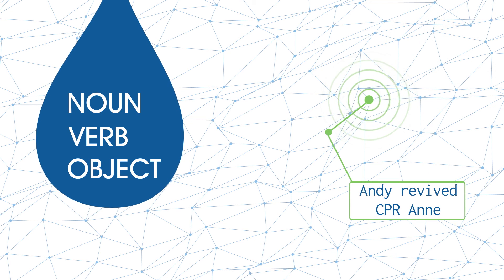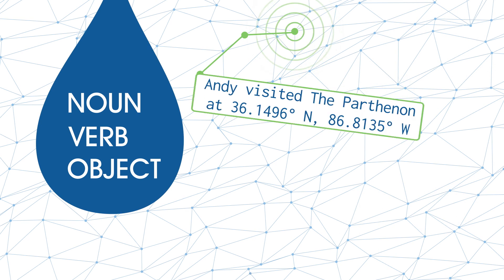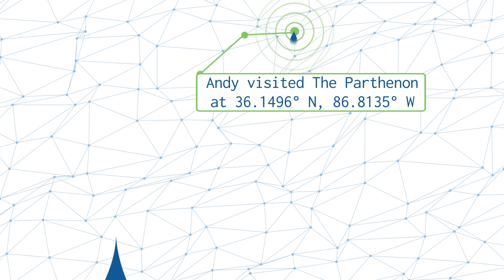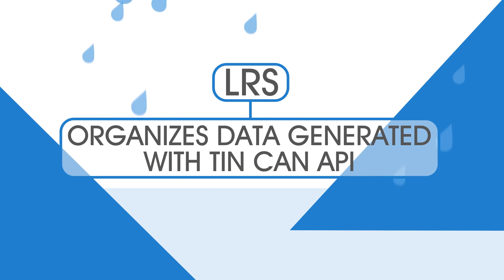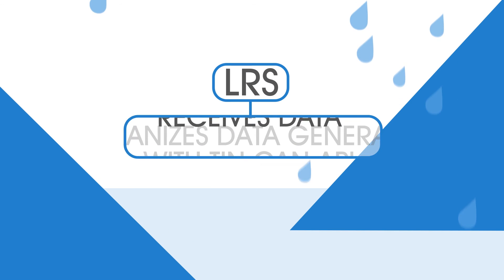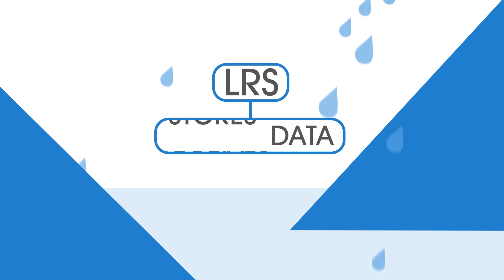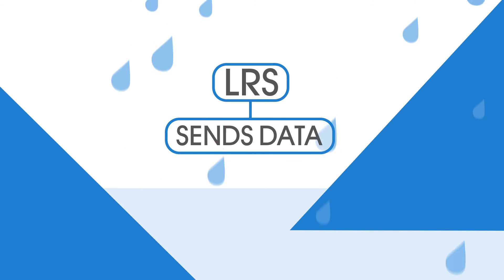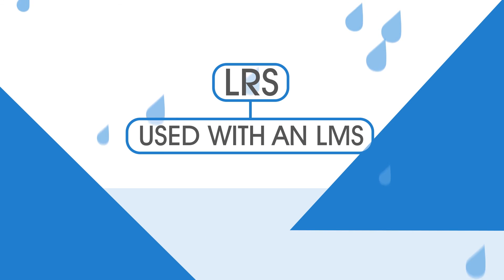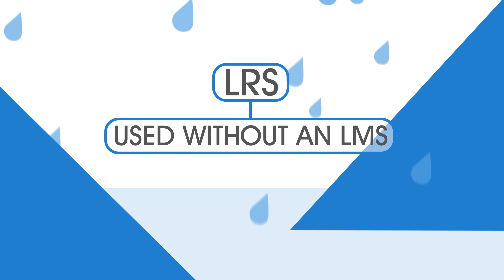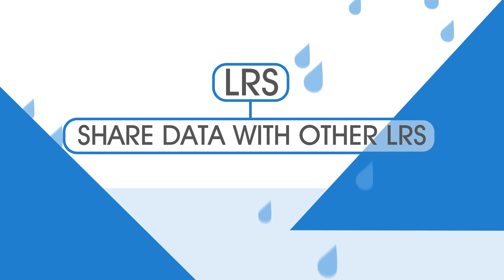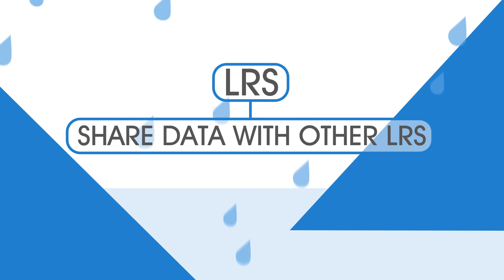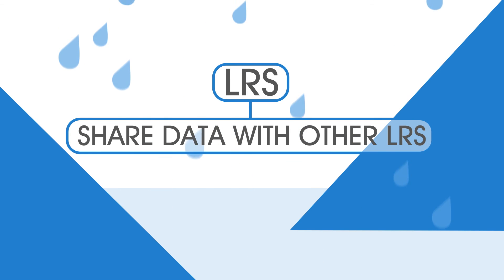Learning record stores track all of these learning events and structure them into meaningful information. A learning record store, or LRS, is a new type of software that organizes the data generated with the Tin Can API. An LRS receives Tin Can data, stores it, and allows other systems to query it. An LRS can be used in the context of an LMS, or it can stand alone. LRSs can also share data with each other, which opens up exciting new possibilities.